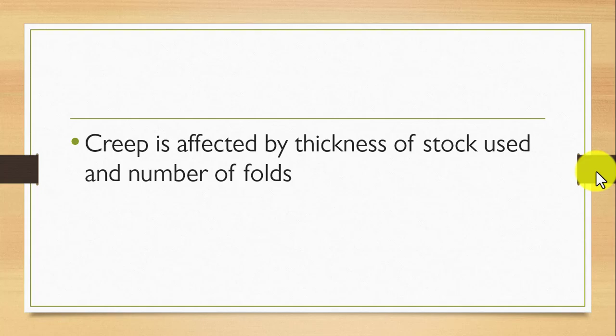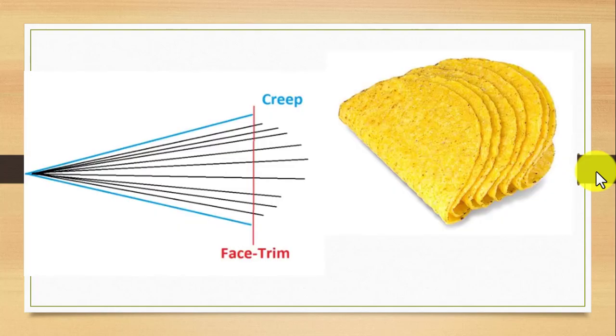What causes creep? Creep is basically affected by stock thickness — if the thickness of the stock is very high, you'll get higher creep. Also, the number of folds matters: a single fold means less creep, three folds means more creep. That is basically it.